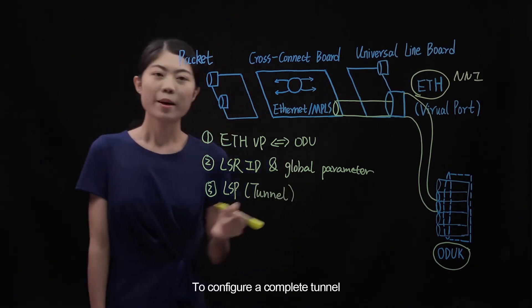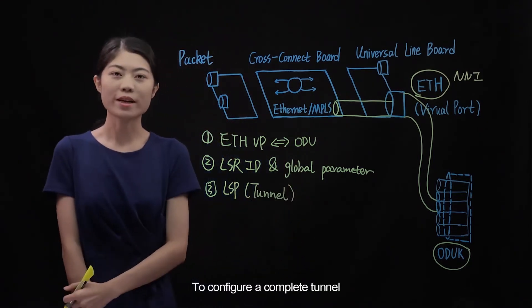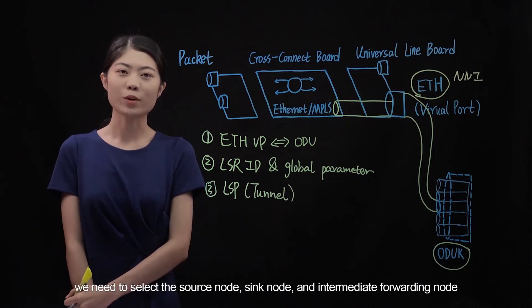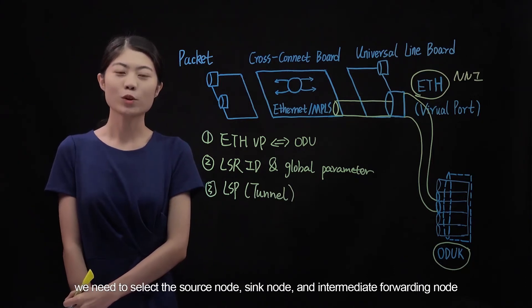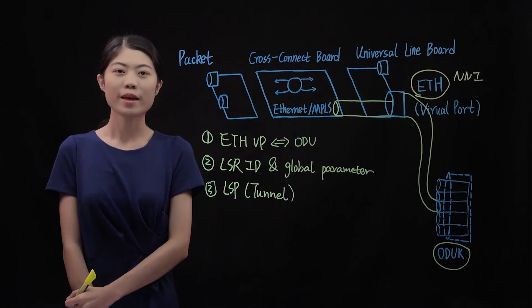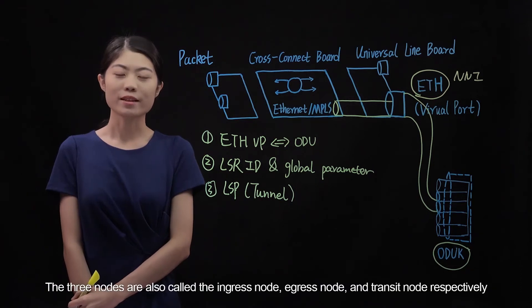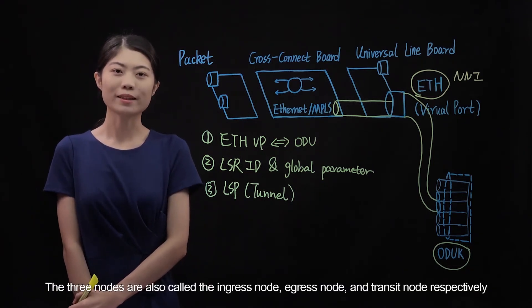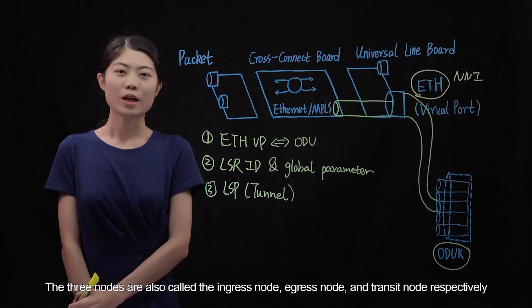To configure a complete tunnel, we need to select the source node, sink node, and intermediate forwarding node. The three nodes are also called the ingress node, egress node, and transit node respectively.